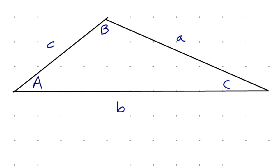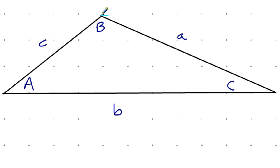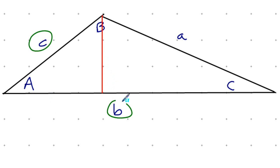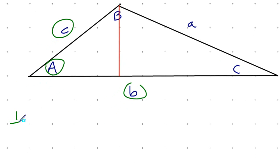We saw from before that when given a triangle, we could find the area if given side-angle-side — two sides and the angle between them. Essentially dropping down a perpendicular, if given the values of C and B and the angle between them, the area would be one half B times C times the sine of that angle, in this case sine of A.